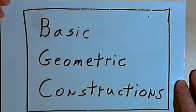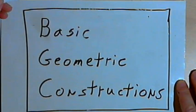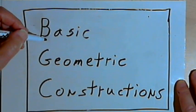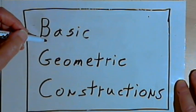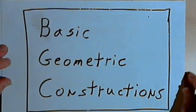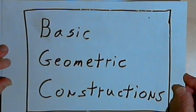This video is provided as supplementary material for courses taught at Howard Community College. In this video I'm going to demonstrate three basic geometric instructions: how to copy a line segment, how to copy an angle, and how to copy a triangle. So let's start with the line segment.